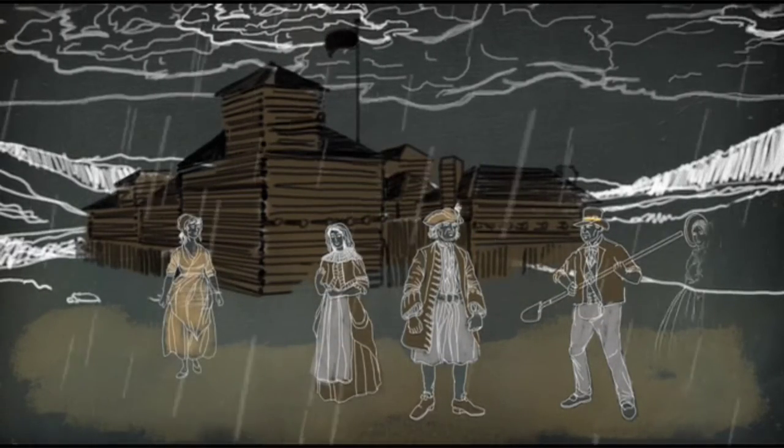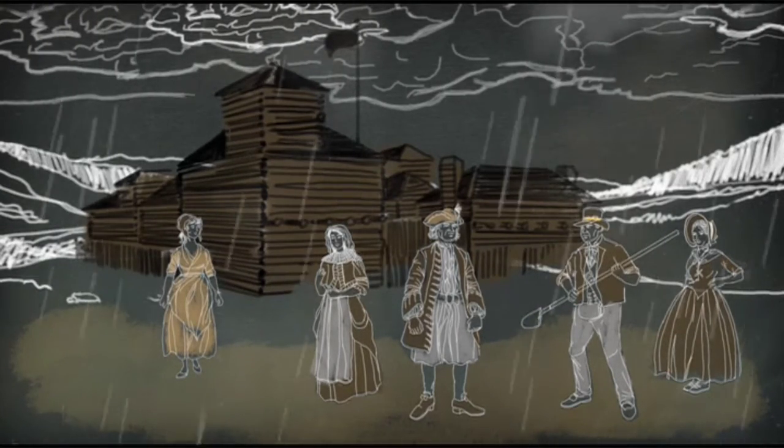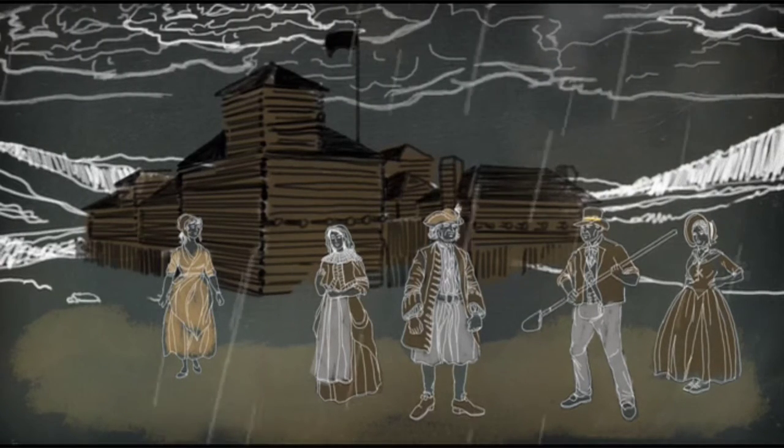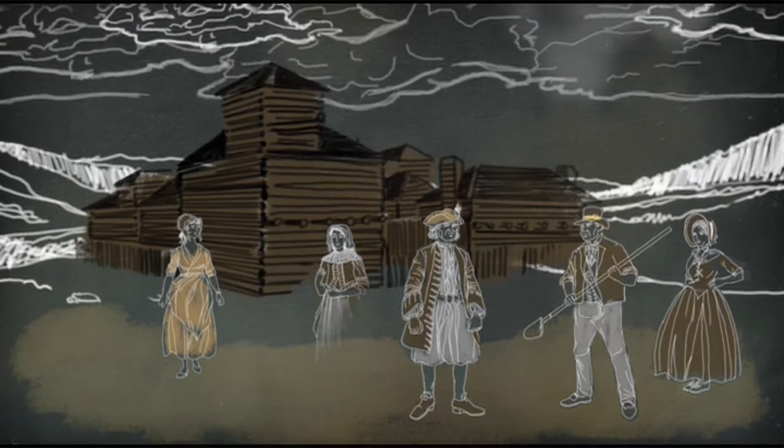They establish this permanent village on the island of Roanoke just off the coast of Virginia. They're supposed to be resupplied every year, but the English get distracted because they're fighting this war with Spain.